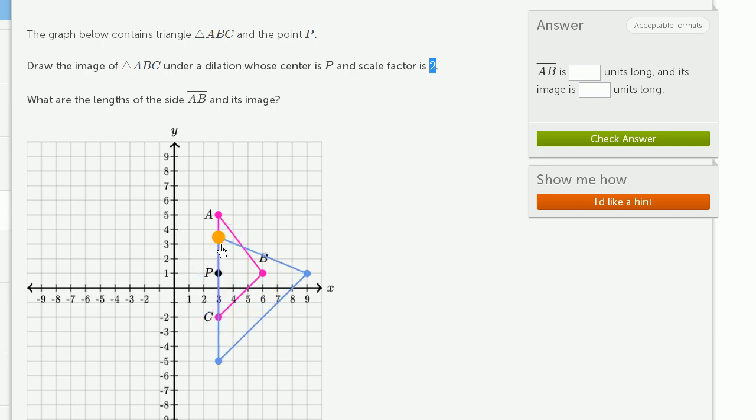And point A is 4 above P. Well, we want to go 4 more. We want to go twice as far. 1, 2, 3, 4. And we get right over there.